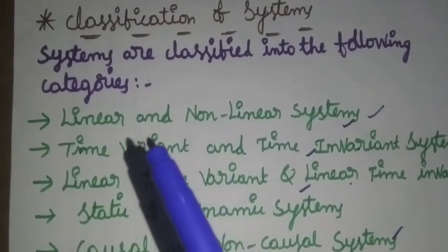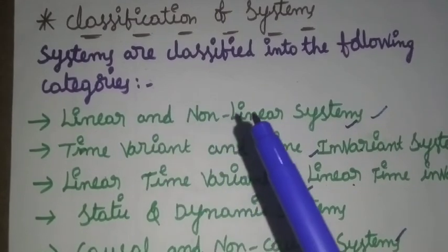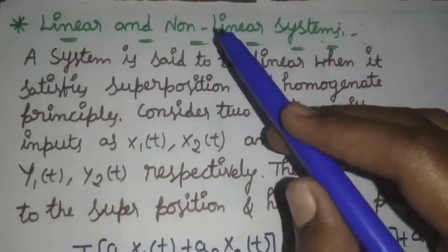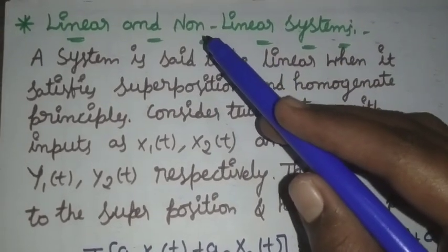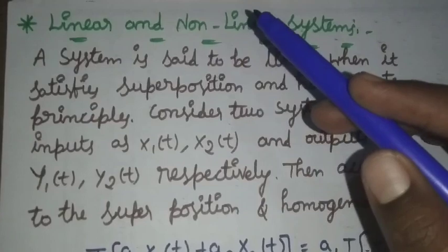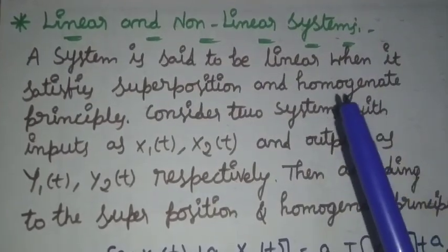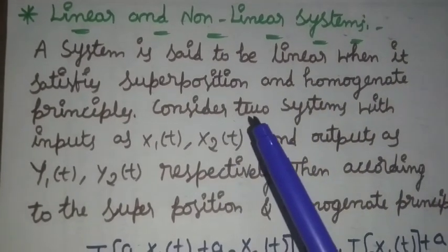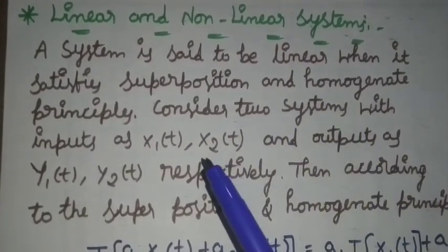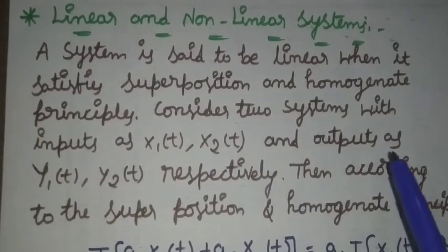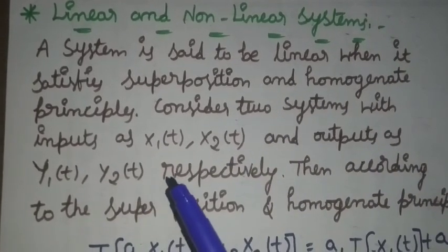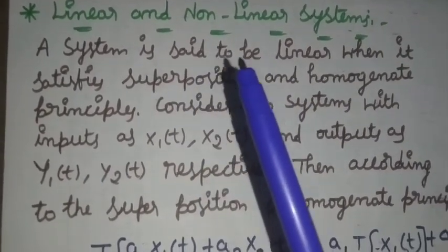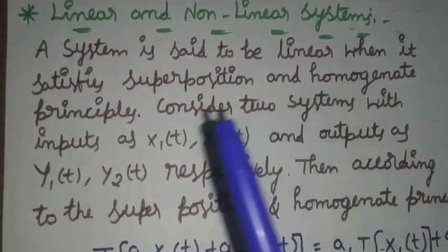In this session, I would like to explain about linear and non-linear systems with one example. In the classification of systems, the first category is linear and non-linear systems. A system is said to be linear when it satisfies the superposition and homogeneity principles. Consider two systems with inputs x1(t) and x2(t), and outputs y1(t) and y2(t) respectively. The system is said to be linear only if it satisfies superposition and homogeneity principles.